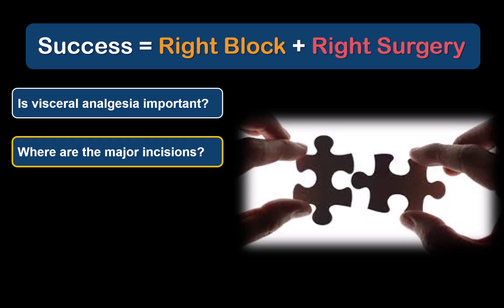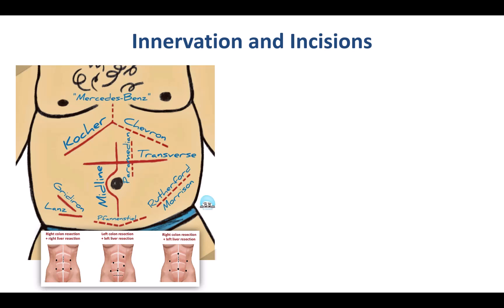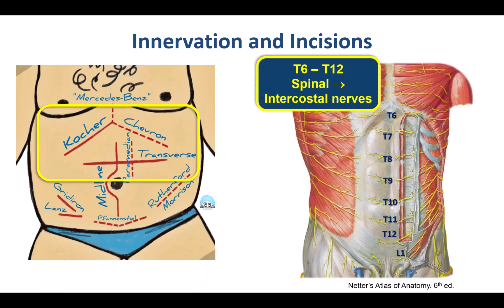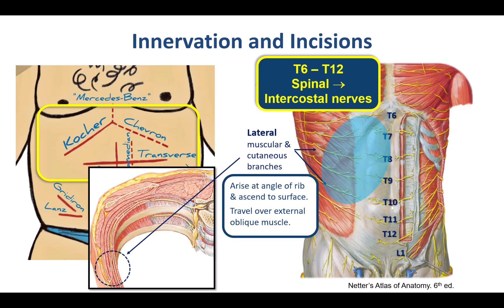The second question to ask is: where are the major incisions in the abdominal wall? Different surgeries involve different incisions, and sometimes even the same surgery might involve different incisions depending on the exact approach used. The abdomen is innervated by the spinal and intercostal nerves of T6 to T12. They can be blocked with paravertebral or paraneuraxial techniques at the appropriate thoracic vertebral level. This proximal site of blockade targets the main intercostal nerve trunk and will also block the lateral cutaneous branches, which arise at the angle of the rib in the posterior to mid-axillary line, ascend through the intercostal and abdominal wall muscles, and run forward on the superficial surface of the external oblique muscle.